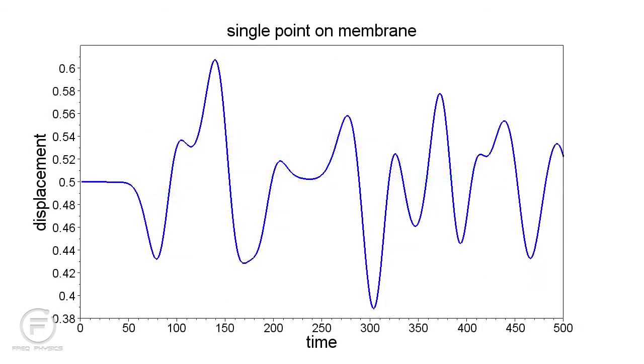Now, if we look at the displacement of a single point on the membrane over time, we find a fairly complicated curve. The equation that tells us how to predict this curve is called the wave equation.